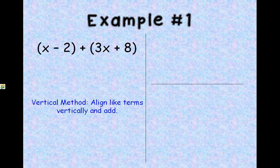We're going to use the vertical method to solve these problems. If you want to use the horizontal method, just adding your like terms, you can do that. So we're going to align the like terms vertically and then we're going to add.